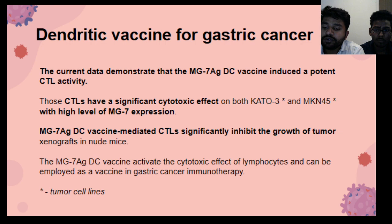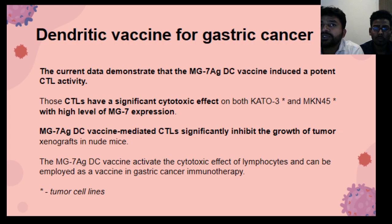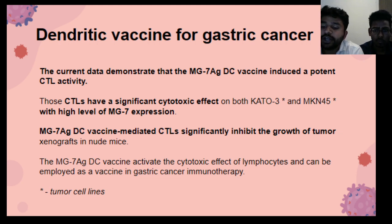Dendritic cell vaccines are a promising immunotherapy approach for the treatment of various cancers, including gastric cancer. We need to sensitize dendritic vaccines to enhance their effectiveness against cancers. There are many ways to sensitize our dendritic vaccine, such as tumor-associated antigens, adjuvants, cytokines, fusion with tumor cells, and combination therapies.